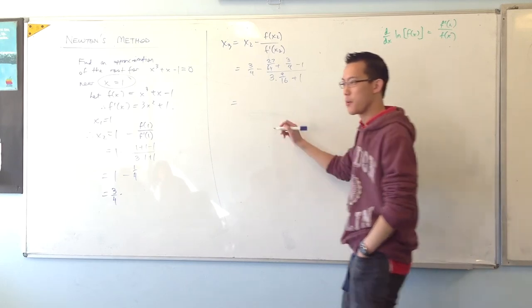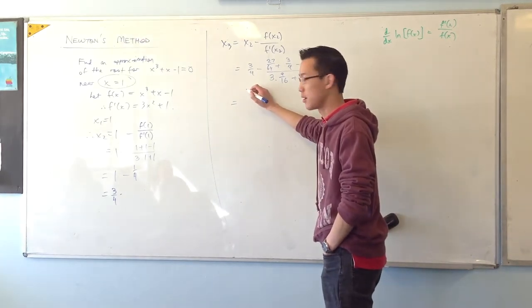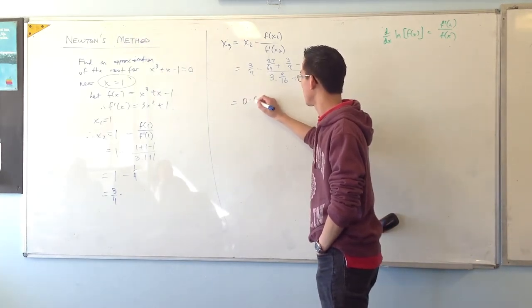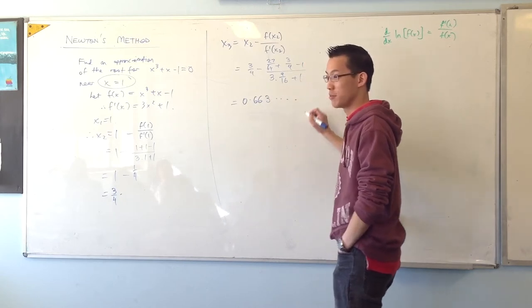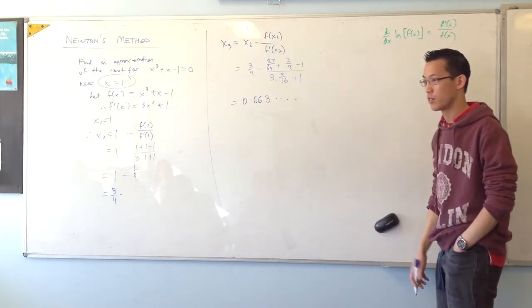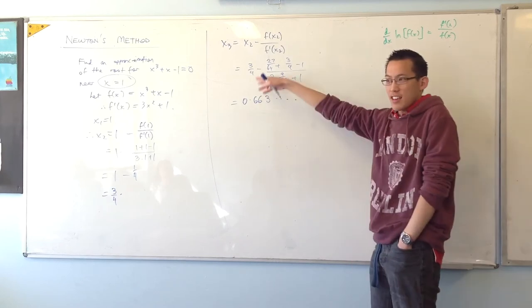1, sorry, say it again. 0.663. 6, 6, 3, and on. More stuff after that. Yeah, okay. And you can see, you can keep going, right?